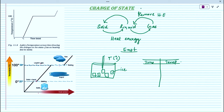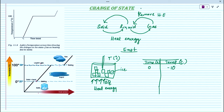We start at time 0 seconds. Consider the initial temperature of ice is minus 10 degrees Celsius. We are giving some amount of heat energy — delta Q — to the system. At T equals 0, the temperature of the ice is minus 10 degrees Celsius.